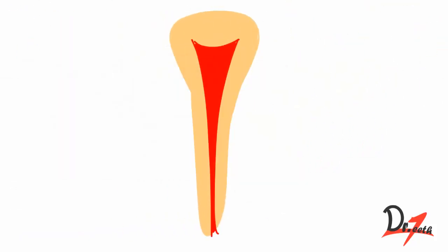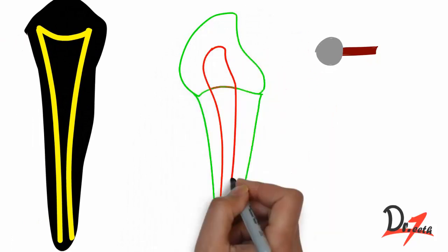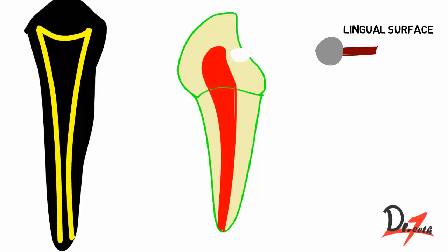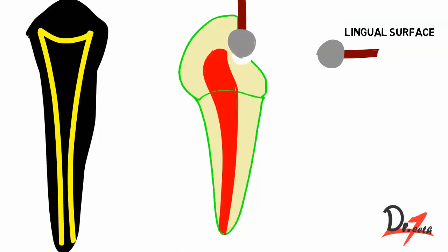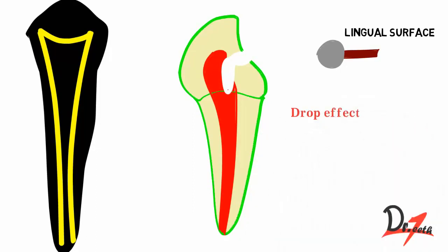To perform the access cavity opening, first take a radiograph to assess the size, shape, and extension of the pulp. Then use a number 4 round bur at high speed to penetrate the center of the lingual surface at an angle perpendicular to it. After penetrating the enamel, direct the bur toward the long axis of the tooth and proceed downward. When the chamber is reached, a drop effect is felt — like a person falling into a gutter — indicating entry into the pulp chamber.